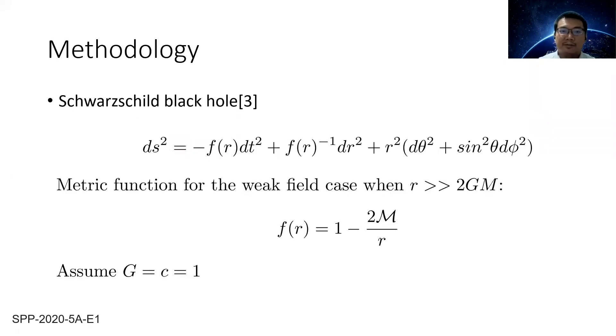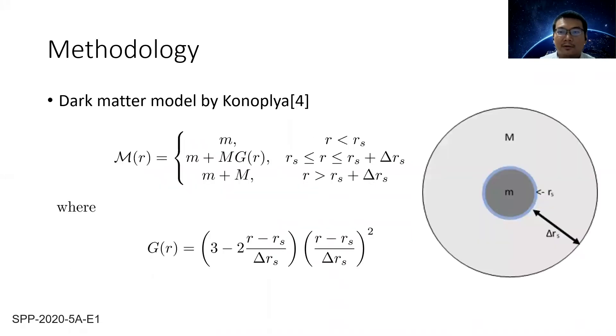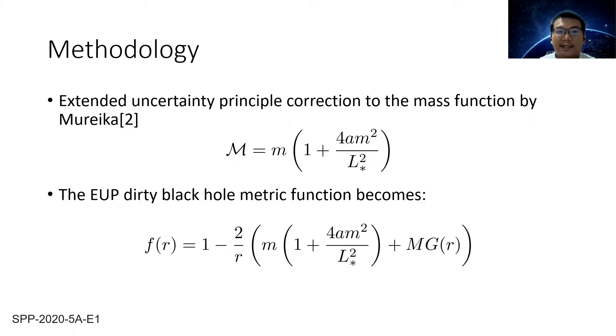Here we add an EUP correction term to the black hole to account for quantum effects over macroscopic distances. From a Schwarzschild black hole, we added the dark matter halo model surrounding the black hole, and then here we will add the EUP correction to the mass function as shown. Thus the metric function becomes as follows.